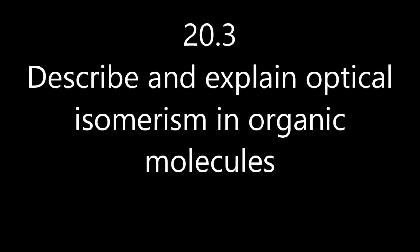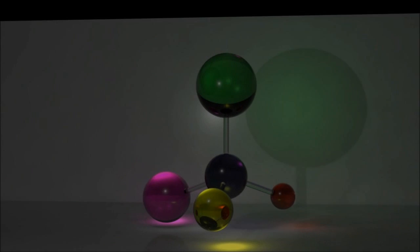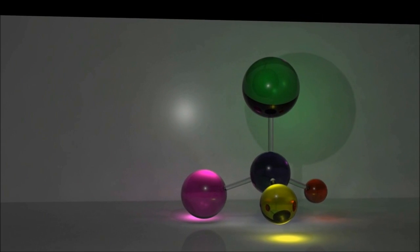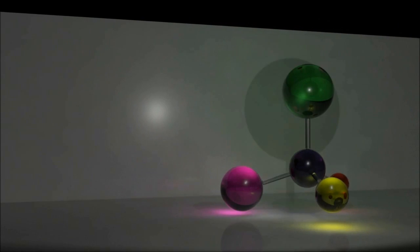Describe and explain optical isomerism in organic molecules. Well, this organic molecule has a carbon in the centre and four different groups attached.